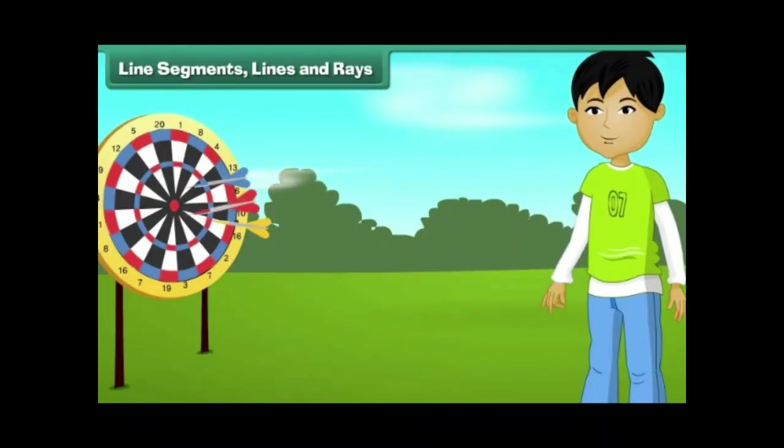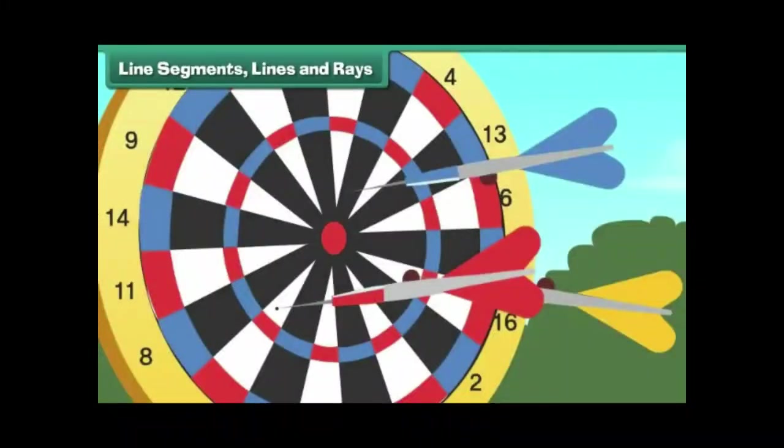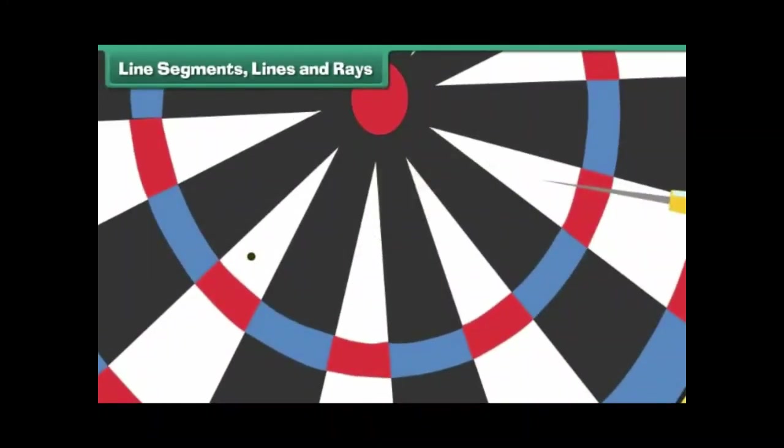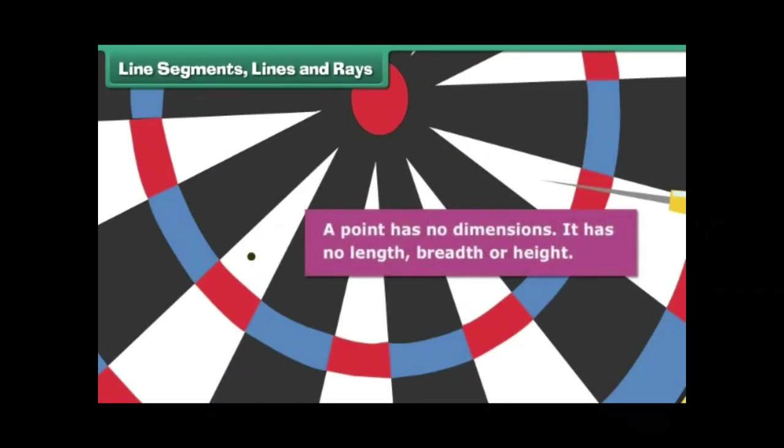Rahul perfects his aim by throwing darts at the dartboard. Here is one such dart. Let us remove it. What do we observe? The dart has left a mark on the dartboard.